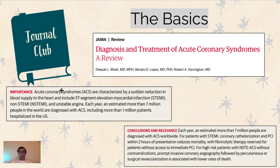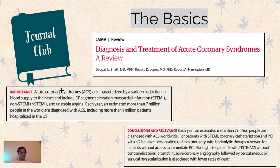Acute coronary syndromes are usually characterized by a sudden reduction in blood flow through the coronary arteries, which is basically the blood supply to the heart. When you have a sudden reduction in the coronary arteries, this can lead to myocardial infarction — known as a heart attack — and potentially myocardial tissue dying out. It's usually a potentially life-threatening emergency, so it's important to understand how to work it up and think about what can cause acute coronary syndrome.